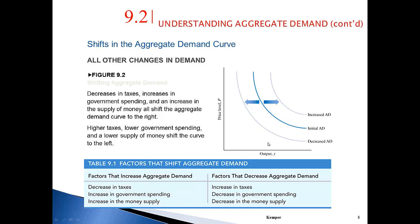All you need to know for the exam is that a decrease in taxes leads to an increase in aggregate demand, as well as an increase in government spending and the money supply. Conversely, Democrats argue that an increase in taxes leads to a decrease in aggregate demand, as well as a decrease in government spending and money supply — all leading to a decrease in aggregate demand and therefore a decrease in output.